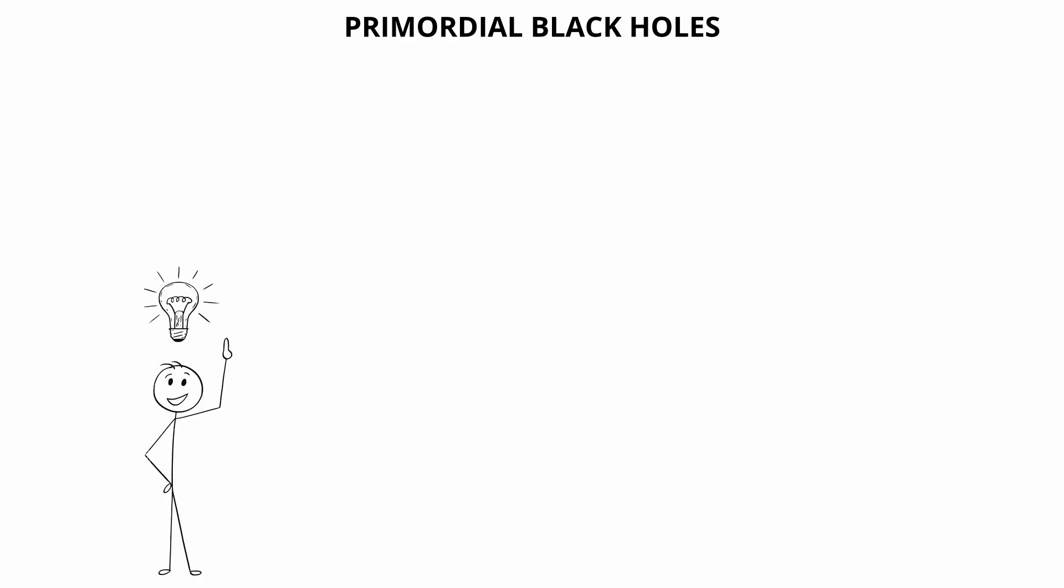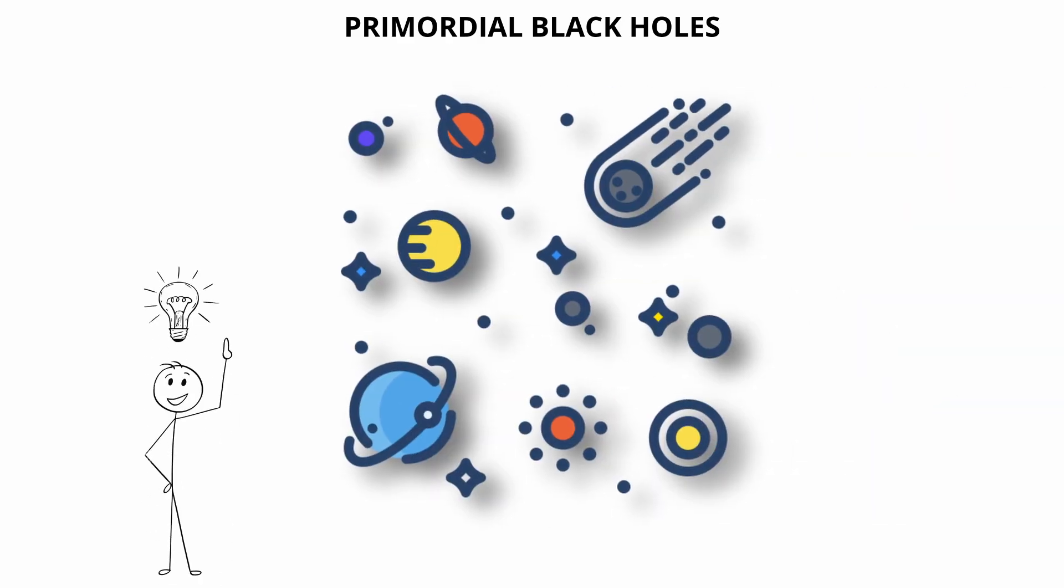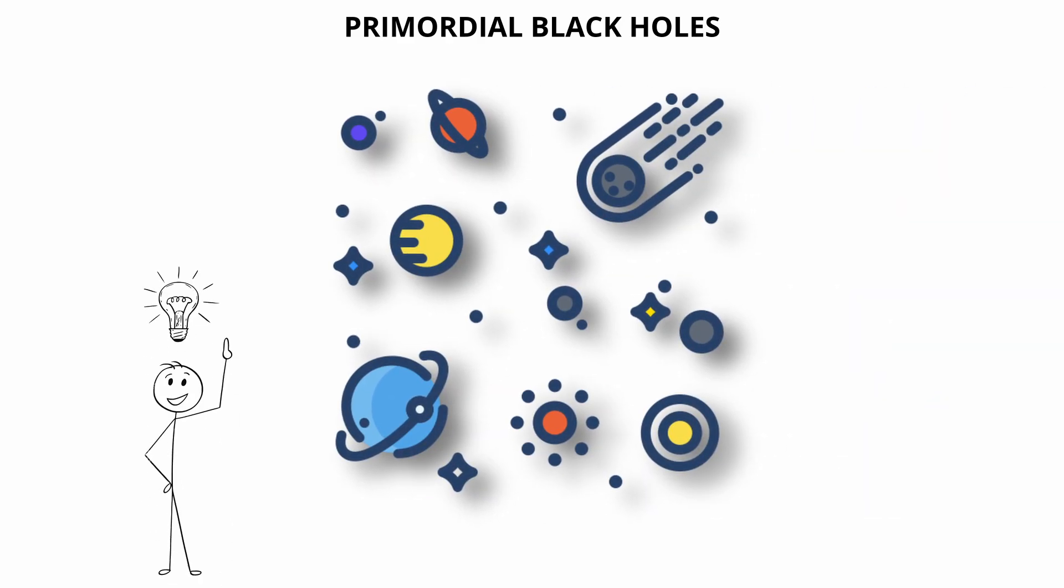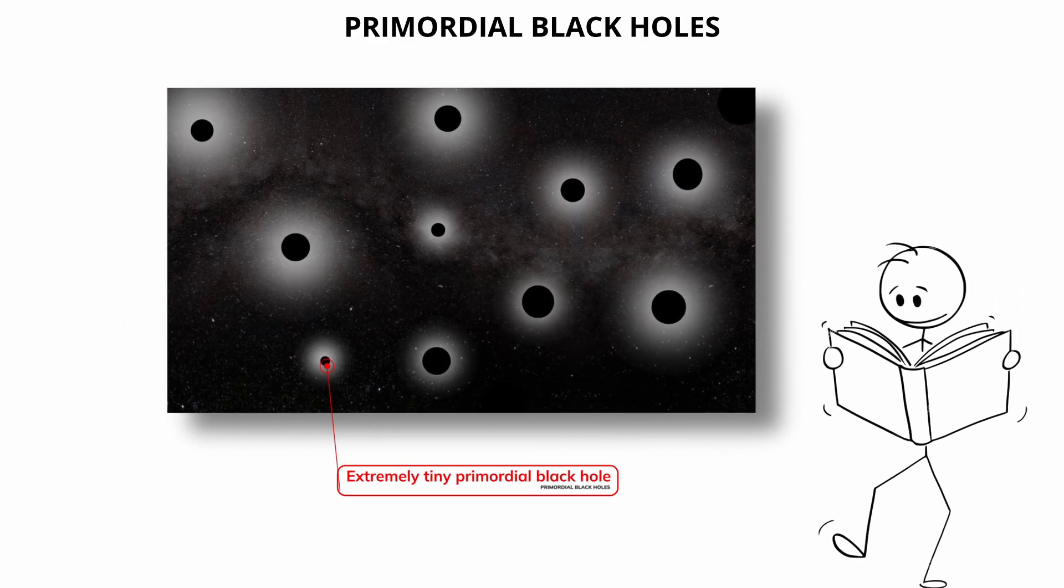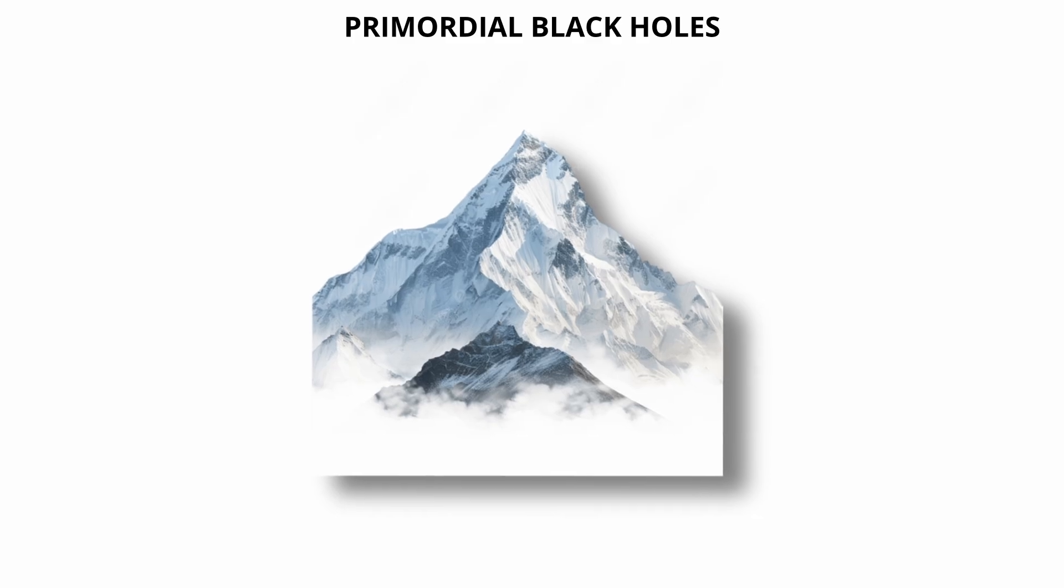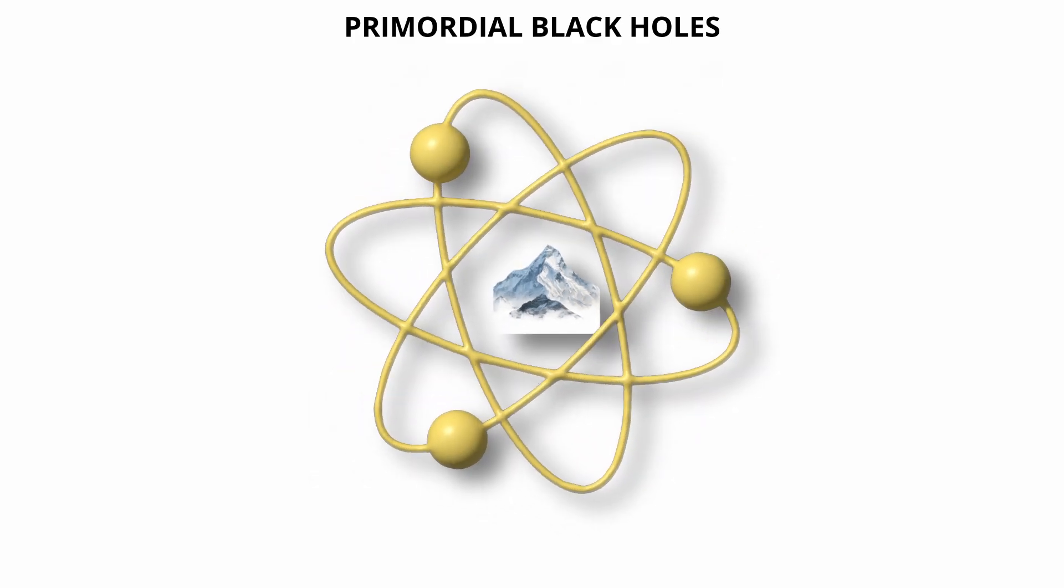The potential masses of primordial black holes span a vast range, from less than a gram to thousands of solar masses. This broad mass distribution arises from the variety of possible density conditions in the early universe. Some theories even suggest that extremely tiny primordial black holes, known as micro-black holes, could have formed with masses smaller than Mount Everest, but with sizes much smaller than an atomic nucleus.